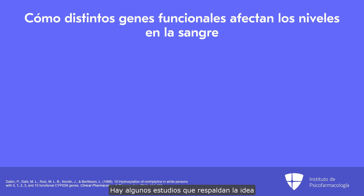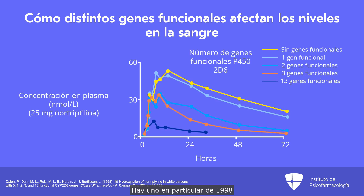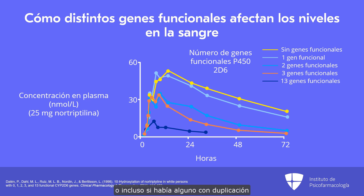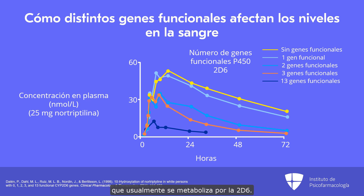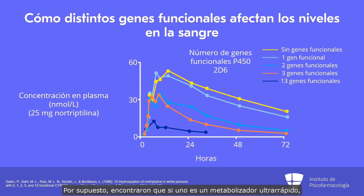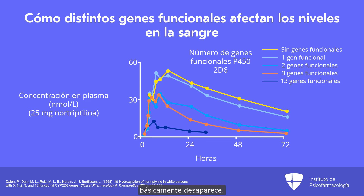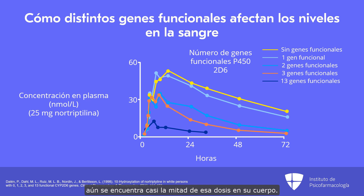There are studies supporting that different functional genes affect blood levels. A study from 1998 looked at CYP2D6 and classified patients according to whether they had zero, one, two, three, or even thirteen functional genes in one patient with duplication. They gave patients a 25 mg dose of nortriptyline, which is classically 2D6 metabolized, and measured blood levels over the next 72 hours. They found that an ultra-rapid metabolizer with 13 copies of the gene had that dose essentially gone within 24 hours.